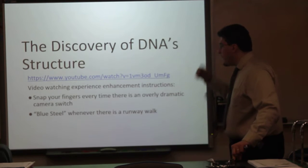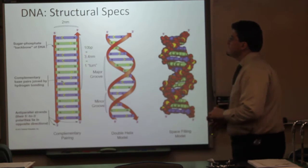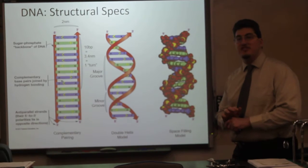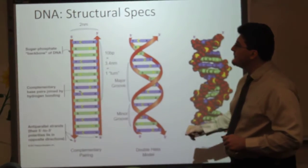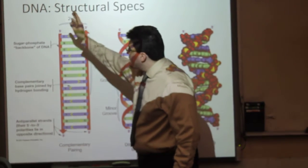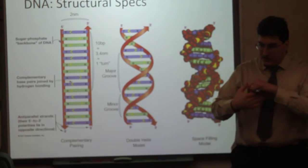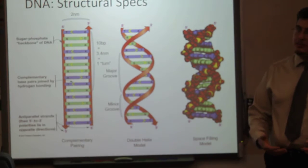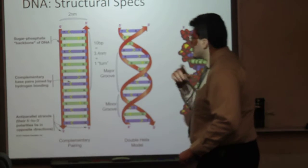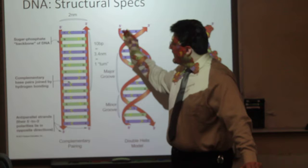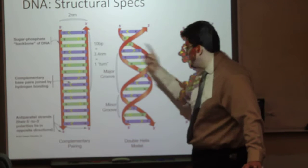We're going to skip over the discovery of DNA by Watson and Crick — that is a video I urge you all to watch on your own time. Now let's talk about the structural specifications of DNA. DNA — the actual ladder that is DNA — is 2 nanometers in width from backbone to backbone. The length of DNA is very long; we're talking billions of base pairs across all the different chromosomes — meters of DNA. Every 10 base pairs is 3.4 nanometers, and that is one turn of a DNA helix.